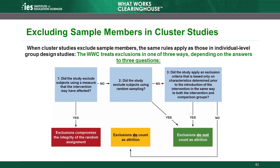In particular, when the exclusion does not pose a significant risk of bias — meaning it does not compromise the random assignment and is either random or based on baseline characteristics — the WWC does not consider the exclusion to be attrition. Just as the WWC does for individual-level RCTs that exclude sample members, when cluster RCTs exclude clusters or individuals, the WWC uses three questions to determine whether an exclusion has the potential to introduce bias. However, in cluster studies, the answers to these questions can affect multiple steps in the review process.